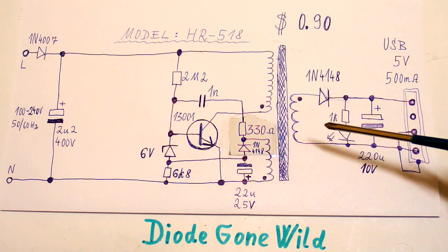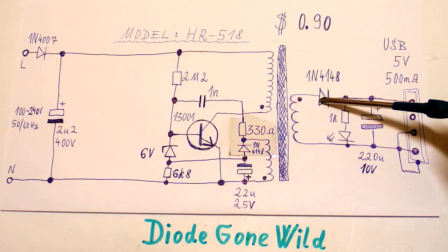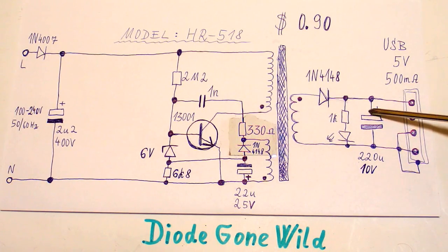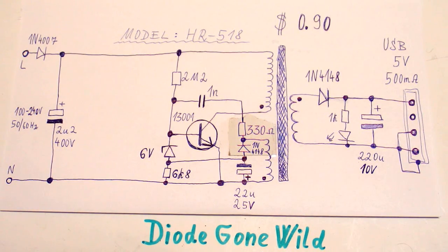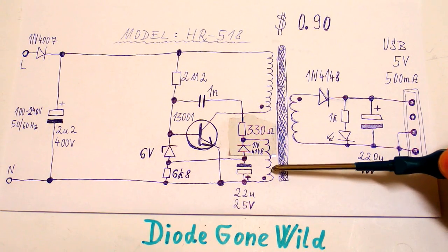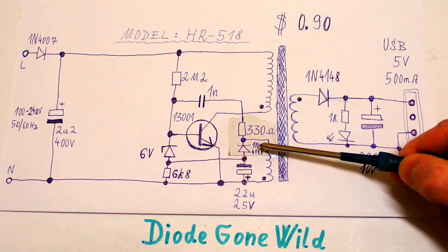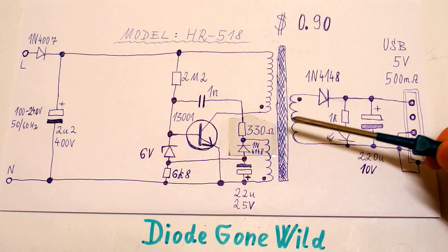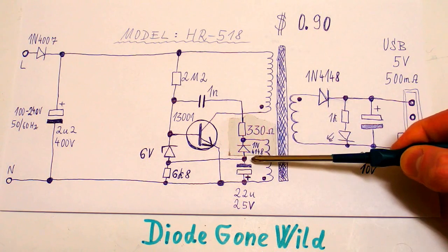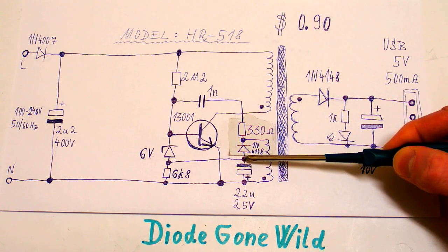The secondary voltage is being rectified by this diode and filtered by this capacitor and this design has no optocoupler. So how does it regulate the output voltage? There's an auxiliary winding and it's being rectified by this diode and because it's in opposite direction than this one, the rectified voltage will be negative.